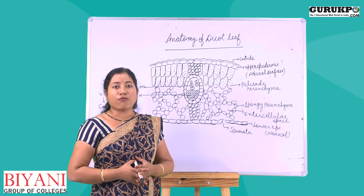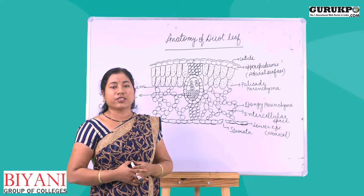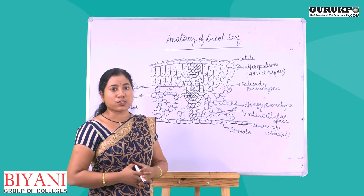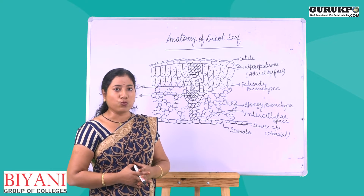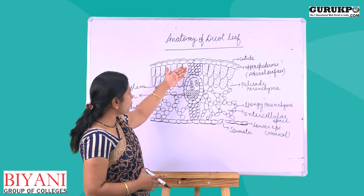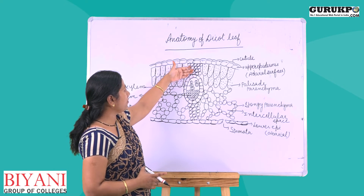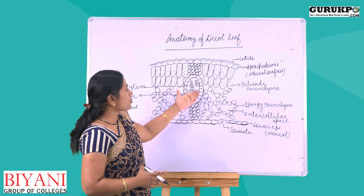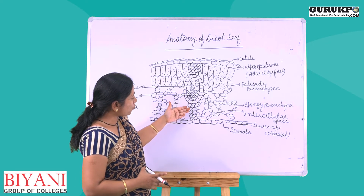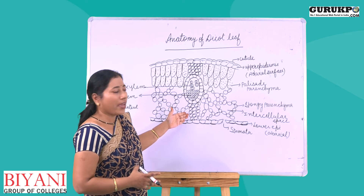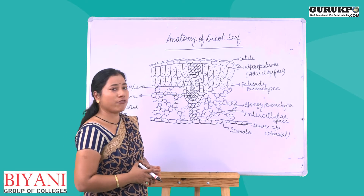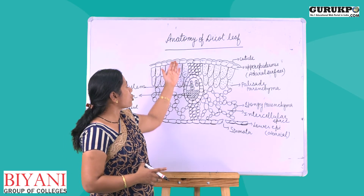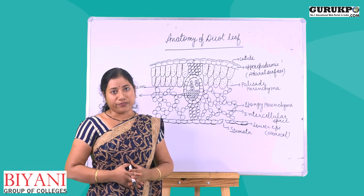Phloem is made up of companion cells, sieve cells, and phloem parenchyma. Its main function is to transport food. There are also some tissues present below the vascular bundles; these tissues are made up of parenchyma and are said to be the bundle sheath extension. This is all about the anatomy of the dicot leaf.